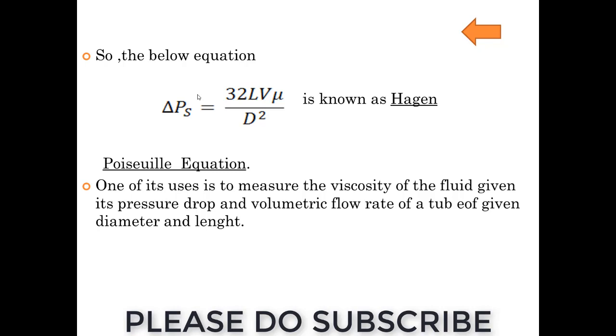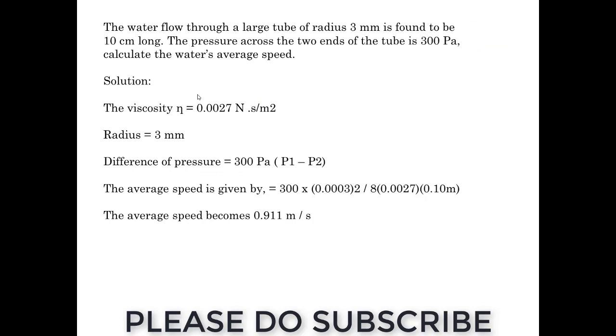This is the final equation that is derived from Hagen-Poiseuille. Delta P, the pressure drop, is nothing but 32 LV mu by d squared. This derivation is generally you can find in any of the textbooks. The reference I have given, and we will just look into a small problem.